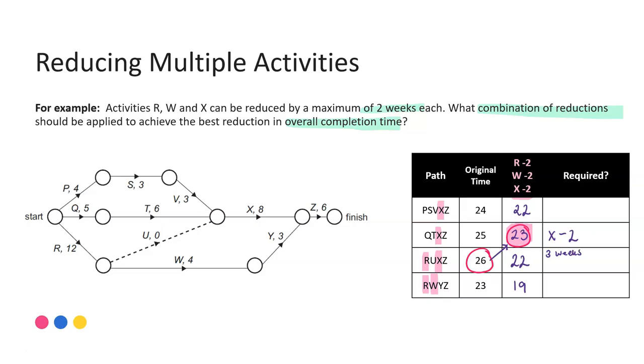Now if I've already said in order to achieve the new critical path that I have to do X by two then let's use that, because that saving or that reduction is already going to be applied. So I've now cut it by two weeks, I'm down to 24. I need an additional one week and my only option is to use activity R. By looking at the new critical path first that helped me identify what I absolutely have to do to achieve that new time of 23. And then I look at what else might be needed. So now I know I also need to reduce R by one.